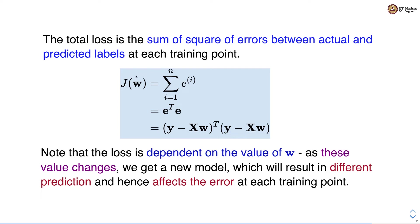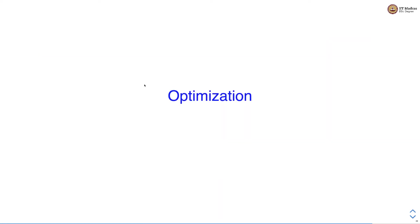This loss or error is dependent on the value of W. As we change W we get a new model, and the new model results in different predictions, affecting the error at each training point differently. Hence the loss is a function of the weight vector. Now that we have a concrete definition of the loss, let's use an optimization procedure to minimize it. The weight vector that results in minimum loss is the weight vector of our interest.